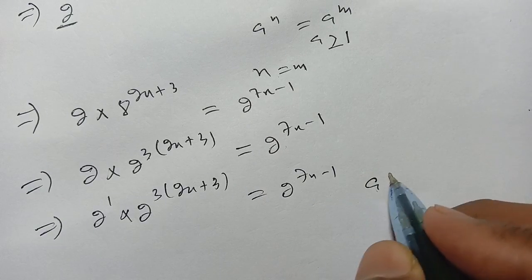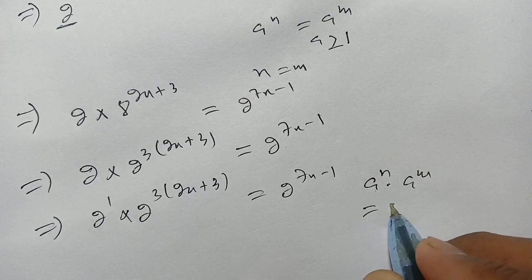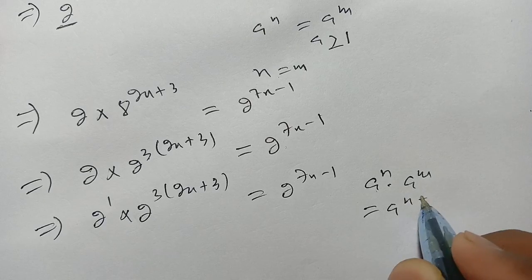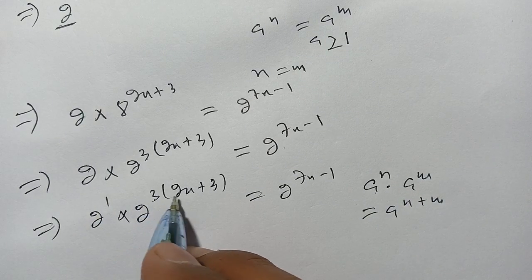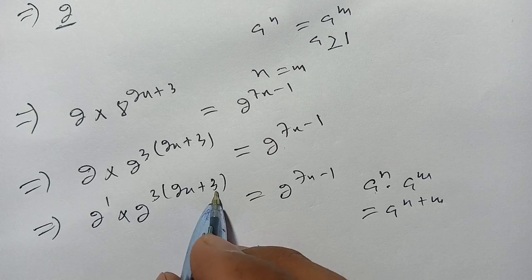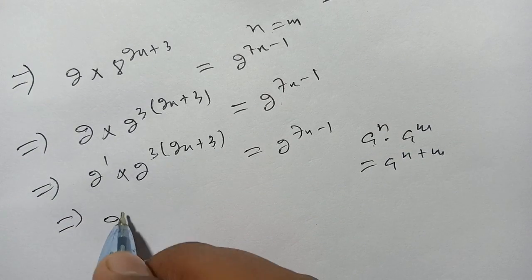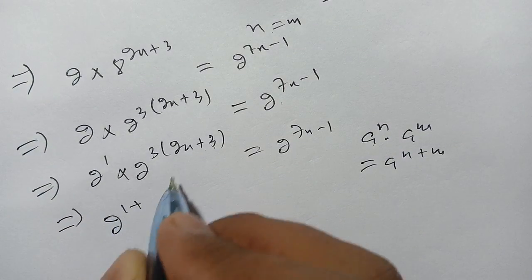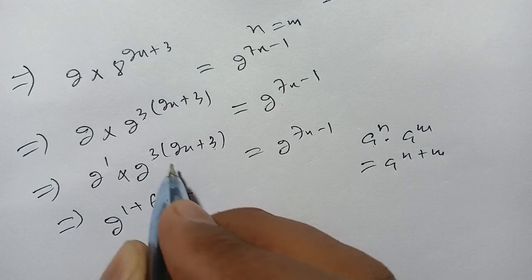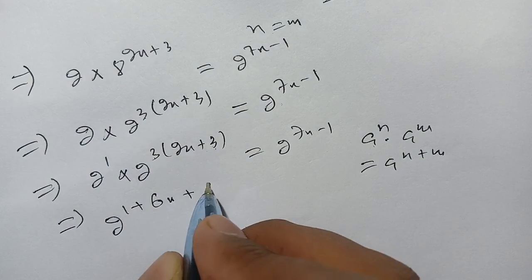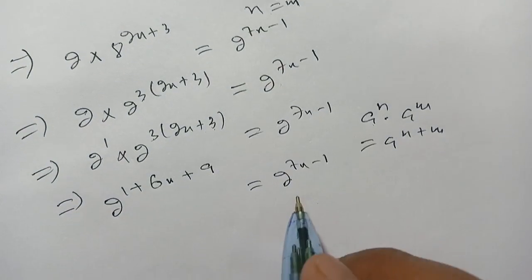We know that a^n × a^m equals a^(n+m). Here n is 1 and m is 3(2x+3). Adding the powers, we get 2^(1 + 6x + 9) equals 2^(7x-1), which simplifies to 2^(6x+10) equals 2^(7x-1).